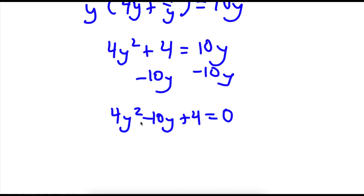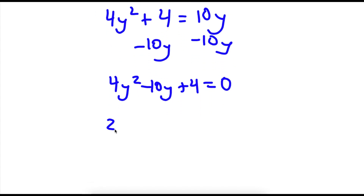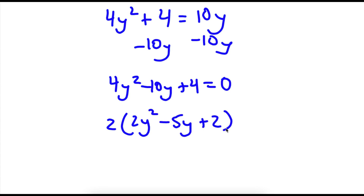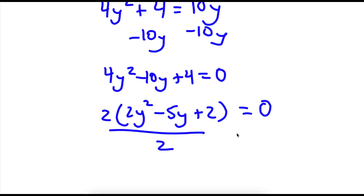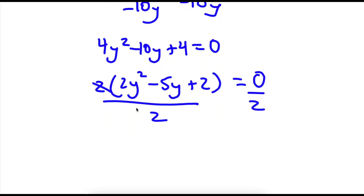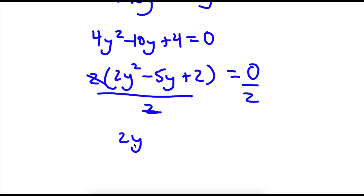From here, I can factor out 2, giving me 2 times the quantity 2y squared minus 5y plus 2, equal to 0. If I divide both sides by 2, I get 2y squared minus 5y plus 2 equals 0.